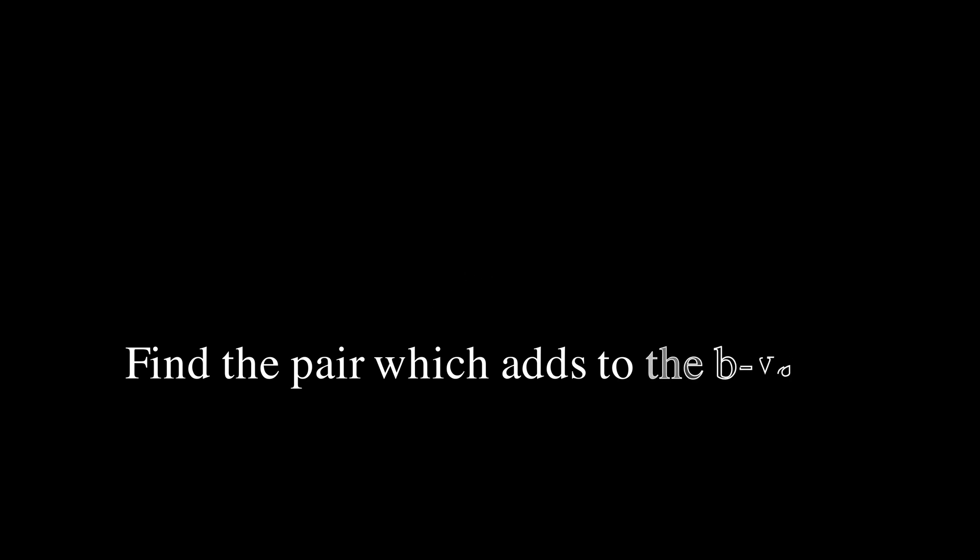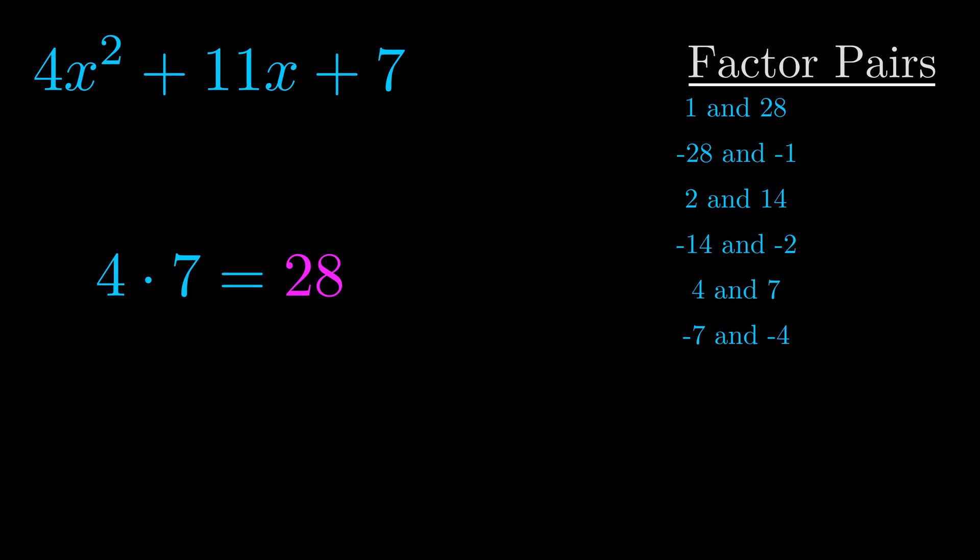The b value is the coefficient on the x term. That's the middle term, the one that we haven't done anything with yet. And really this is the only factor pair that we need.